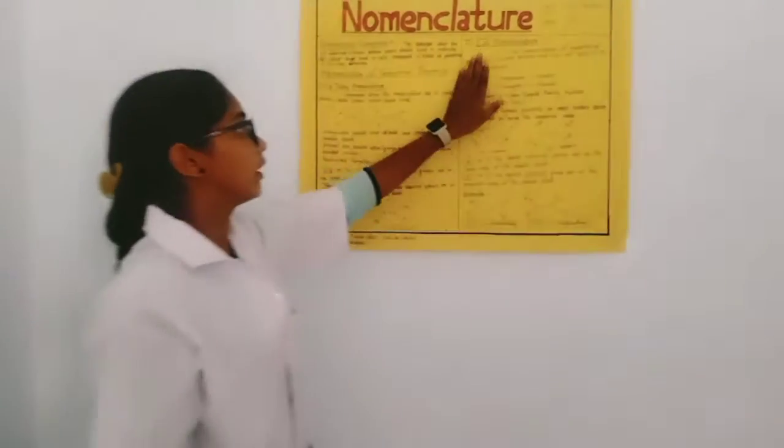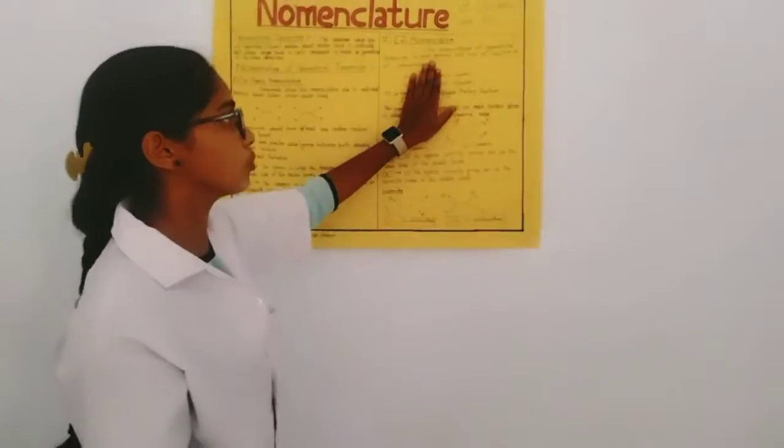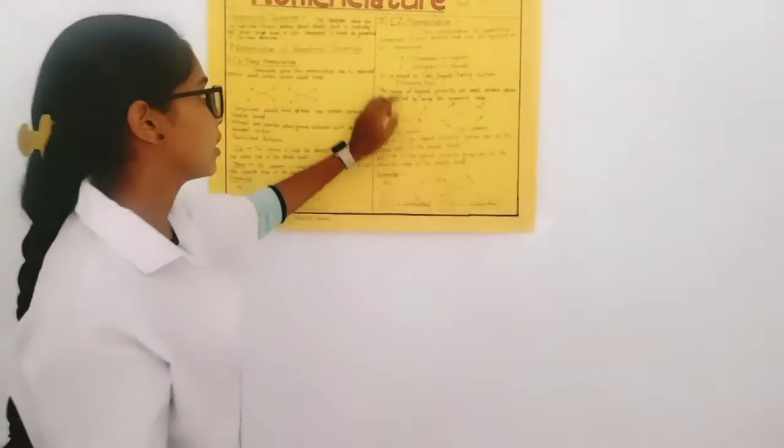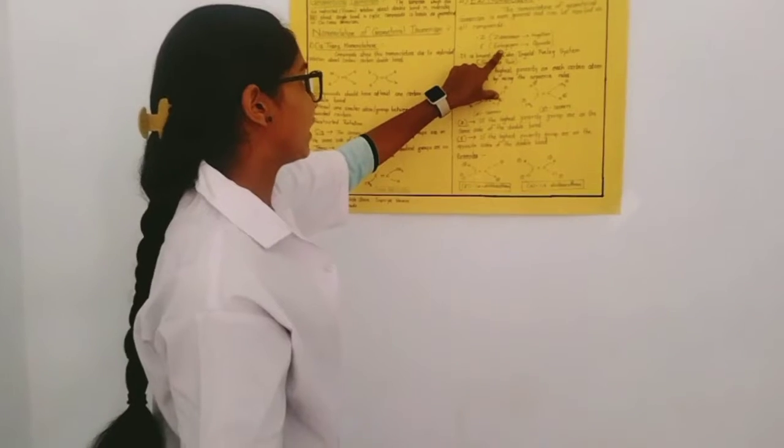In E-Z nomenclature, the nomenclature of geometrical isomers is more general and can be applied on all compounds. Z means zusammen, means together, and E means entgegen, means opposite.